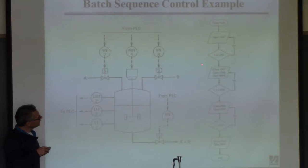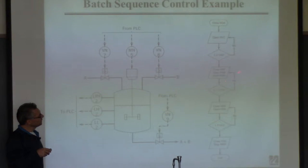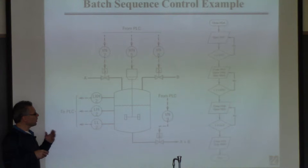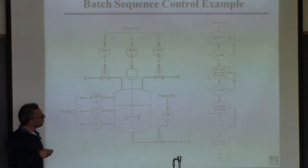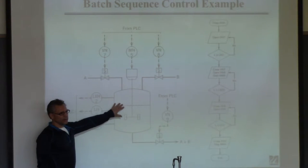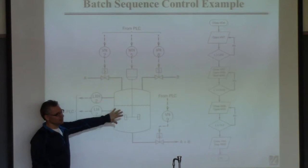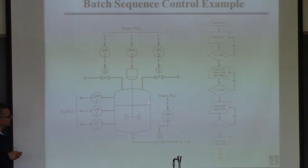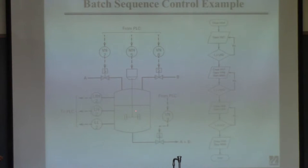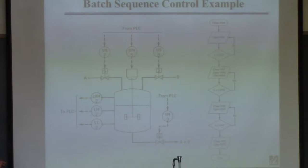During this batch step — particularly the step where reaction is occurring — you might want to do control during the batch. At this point the system is just evolving by itself; whatever's happening is happening. There's probably a temperature here that you'd measure but you're not trying to control it — you're just letting it be whatever it's going to be, then draining when the reactor is full. So you might actually want to do some control during the batch.